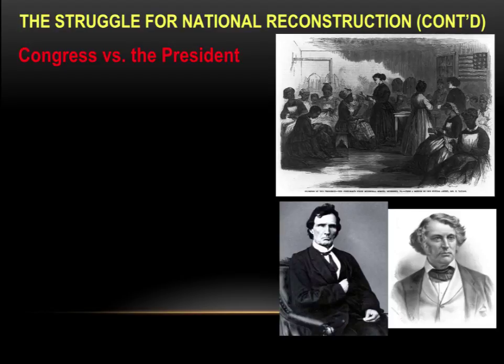It became Congress versus the President. Because Abraham Lincoln was assassinated, it was a Republican Congress versus former Democrat President Andrew Johnson. Lincoln had run on a Union ticket in 1864 — not a Republican ticket — with Andrew Johnson, the Southern Democrat from Tennessee who had not supported secession and stayed in the Senate. When Lincoln passed away, his successor was a Democrat, which led to a lot of suspicion, mistrust, and disagreement.